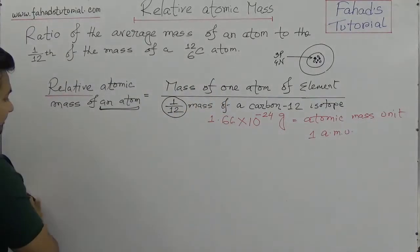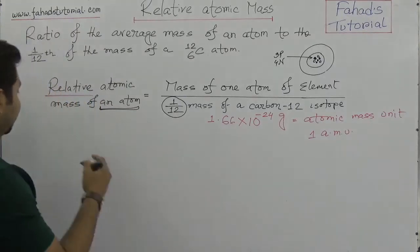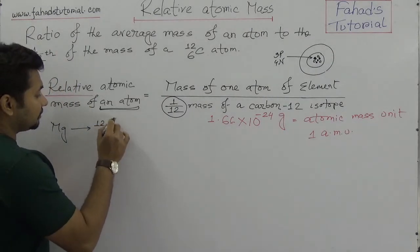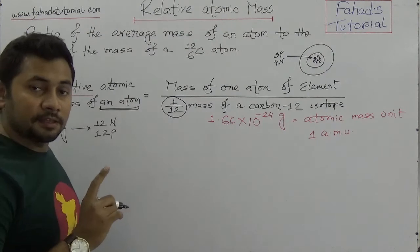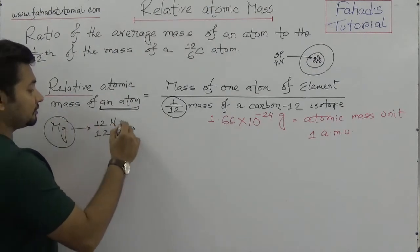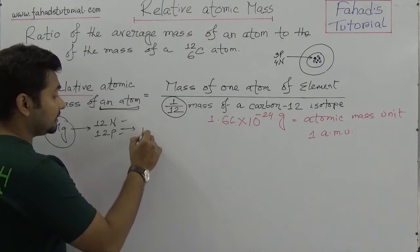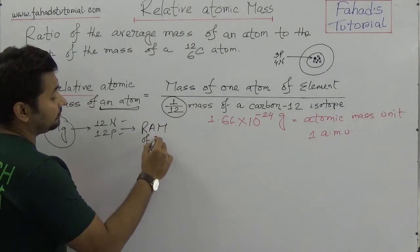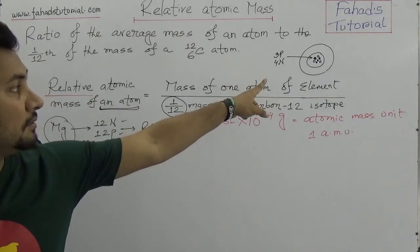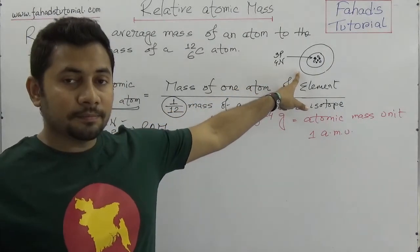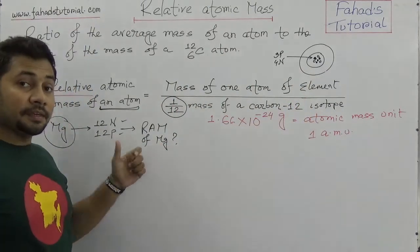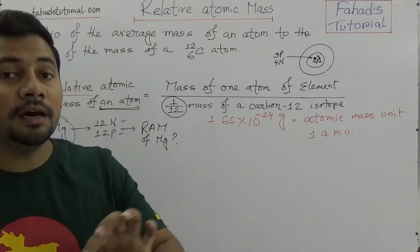Suppose in your question paper it is given that in magnesium there are twelve neutrons and twelve protons — in a magnesium atom there are twelve neutrons and twelve protons. What is the relative atomic mass of magnesium? Earlier I gave the example of lithium — three protons and four neutrons. But here it is given that in magnesium there are twelve neutrons and twelve protons. What is the relative atomic mass?